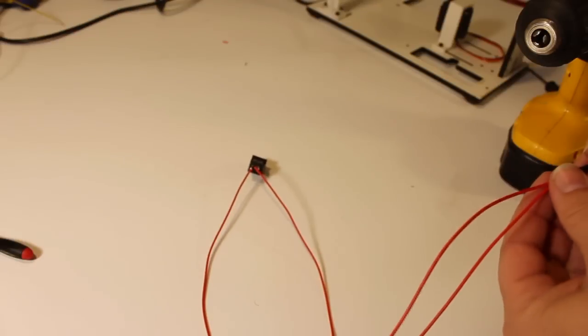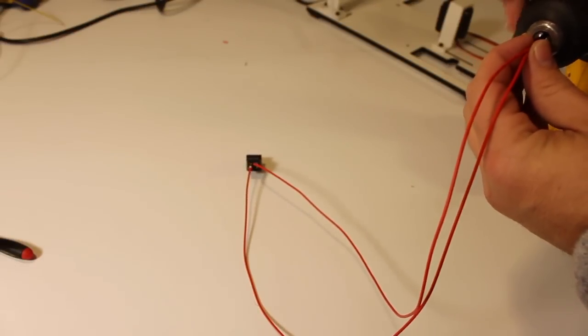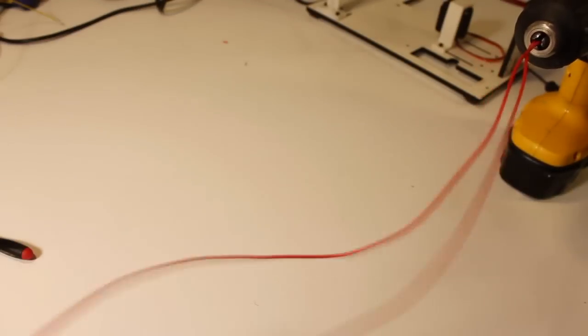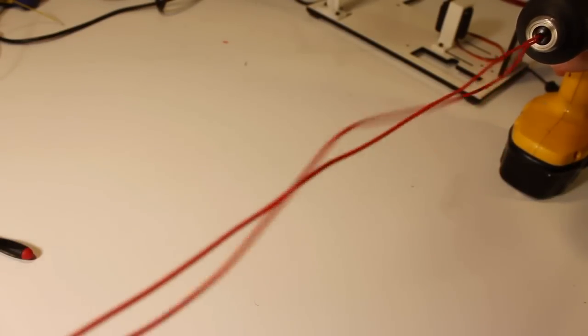You can twist the wires by hand, but the easiest way by far is to chuck it into a drill gently, stretch it up, and spin.